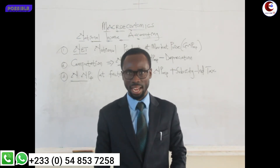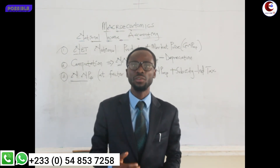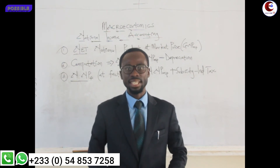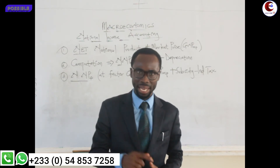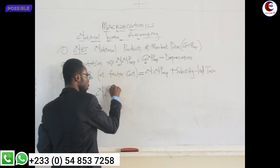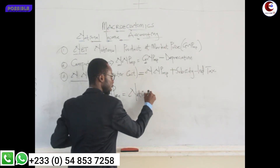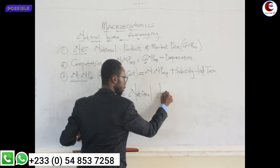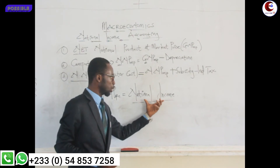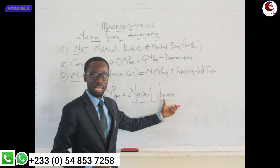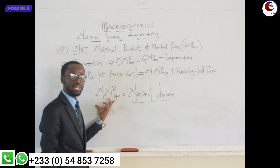Now concluding: NNP at factor cost. Listen carefully — in some questions they will not tell you to calculate the NNP at factor cost. They will just tell you to calculate the national income. When the question says to compute or calculate the national income, it means the national income at factor cost.